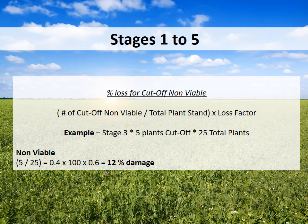To determine the percentage of loss for cut-off or non-viable plants, take the total number of cut-off or non-viable plants, divided by the total plant stand, multiplied by the stage loss factor. For example, if you had a stage 3 plant and 5 plants were cut off out of a total of 25 plants, you would divide 5 by 25, which gives you 0.2, multiplied by 100, multiplied by 0.6 — which is the factor for the stage 3 plant — giving you a 12% damage.